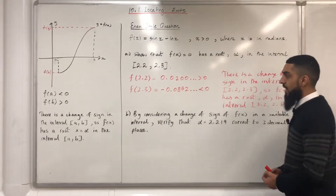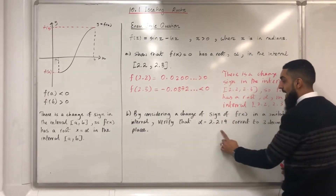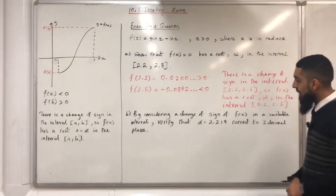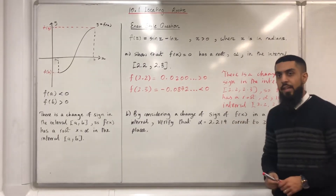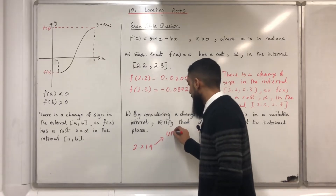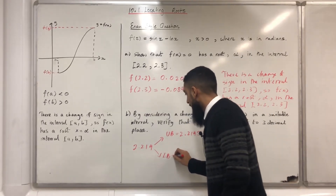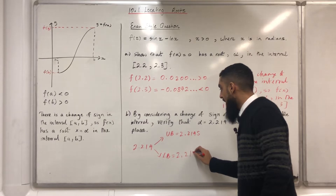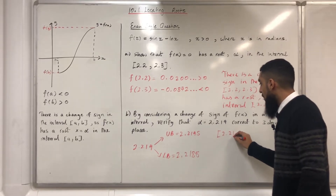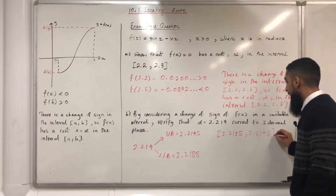Moving on to part B: by considering a change of sign of f(x) in a suitable interval, verify that α = 2.219 correct to three decimal places. What we need to do is work out the upper and lower bounds of 2.219 given to three decimal places. The upper bound is 2.2195 and the lower bound is 2.2185. My suitable interval is therefore 2.2185 to 2.2195.